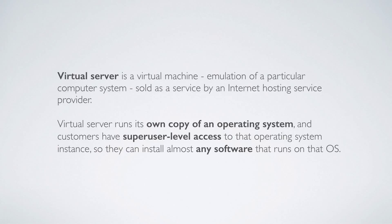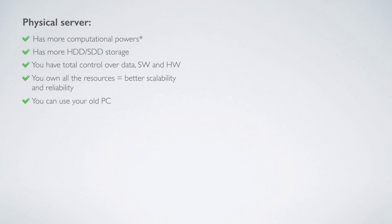Let's compare these two types of servers. Physical server benefits: it has more computational power and uses all the power of the CPU it has. Usually a physical server also has more HDD or SSD storage, since it uses all the storage the computer has. You have total control over data, software, and hardware — you can add or remove hardware and software. You own all the resources of the computer, which results in better scalability and reliability.